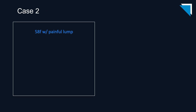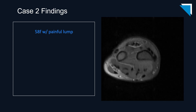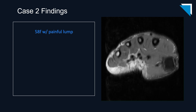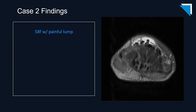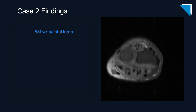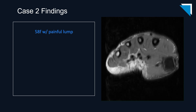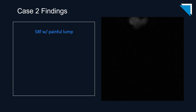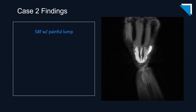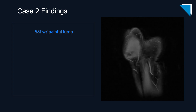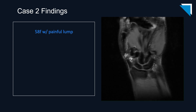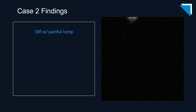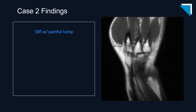Our next patient is a 58-year-old woman with a painful lump. Let's begin by scrolling through these axial fluid-sensitive images. I'll direct your attention to the dorsum of the wrist — it's not a subtle finding. These are the coronal fluid-sensitive images from the same patient. Feel free to pause the video if you want to scrutinize a particular area. And finally, the coronal non-fat-suppressed T1-weighted images.